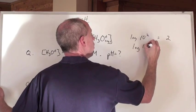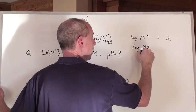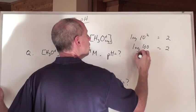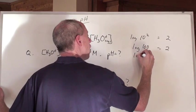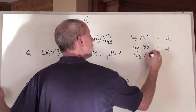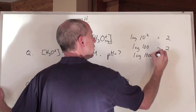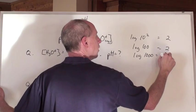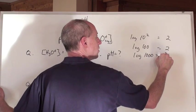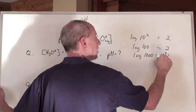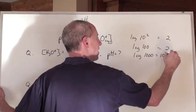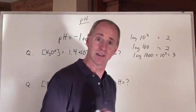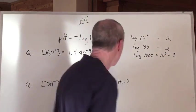What's the log of 100? Well, that's 10 to the 2, so it's 2. What's the log of 1,000? Well, the number 1,000 is 10 to the 3, and the log of that is just the power to which that base 10 is taken. So it's 3.